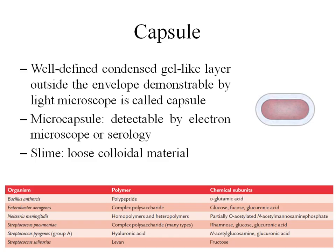Hello students, today I'm going to discuss the morphology of bacteria, Part 2. Let's study about the capsule. The capsule is a well-defined condensed gel-like structure outside the envelope, which can be demonstrated by light microscopy. Sometimes it can be a very tiny structure which can only be detected by electron microscopy or by serological techniques — that's called a microcapsule.